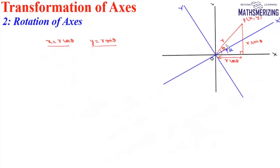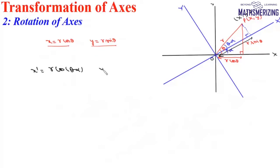In the new system X dash, Y dash, this angle will now be theta minus alpha. So we look for the new coordinates. X dash will be R cos(theta minus alpha) and in the same way we can write Y dash as R sin(theta minus alpha).